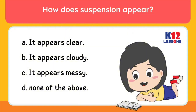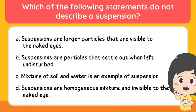How does a suspension appear? Which of the following statements does not describe a suspension? A. Suspensions have larger particles that are visible to the naked eye. B. Suspensions are particles that settle out when left undisturbed. C. Mixture of soil and water is an example of suspension. D. Suspensions are homogeneous mixtures and invisible to the naked eye.